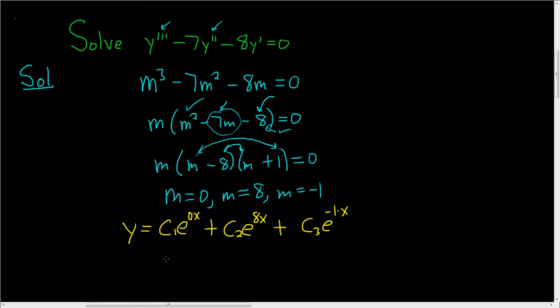And we can clean this up. So the final answer is y equals, e to the 0x is simply e to the 0 which is 1, so this is c1 plus c2 e to the 8x, and then finally we have c3 e to the negative x. And that's the final answer.